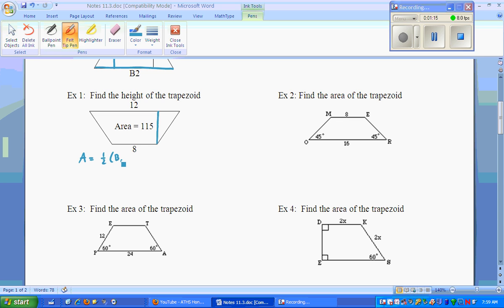Area equals 1 half base 1 plus base 2 times height. Area is 115 equals 1 half. Base 1 is 12, base 2 is 8, times the height. We got half of 20 times the height. So equals 115, half of 20 that's 10h equals 115. Let me come over here. You divide by 10, so the height equals 11.5 units. Because we don't have units, so make sure when you're doing questions if there are, that you're going to be putting units on there.